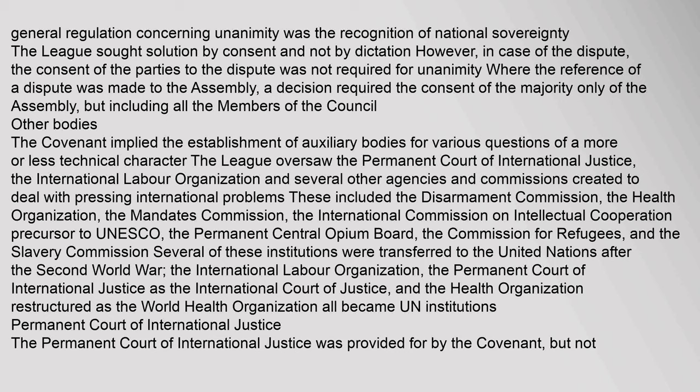The Covenant implied the establishment of auxiliary bodies for various questions of a more or less technical character. The League oversaw the Permanent Court of International Justice, the International Labour Organization, and several other agencies and commissions, including the Disarmament Commission, the Health Organization, the Mandates Commission, the International Commission on Intellectual Cooperation (precursor to UNESCO), the Permanent Central Opium Board, the Commission for Refugees, and the Slavery Commission. Several of these institutions were transferred to the United Nations after the Second World War — the ILO, the Permanent Court of International Justice as the International Court of Justice, and the Health Organization restructured as the World Health Organization.